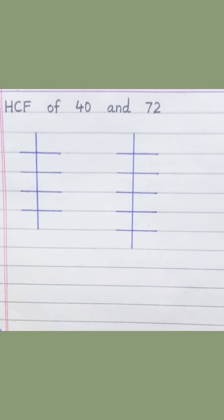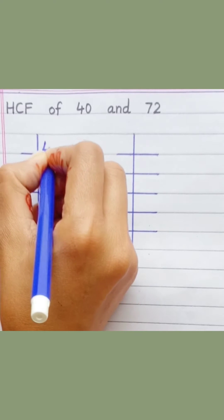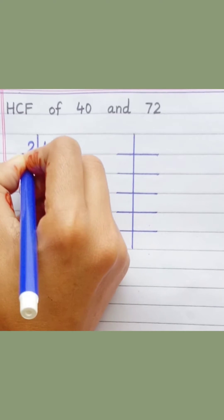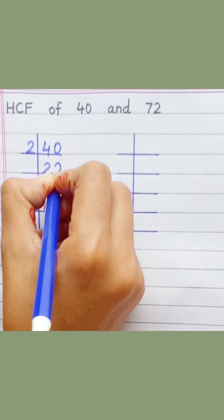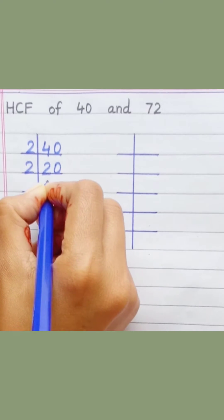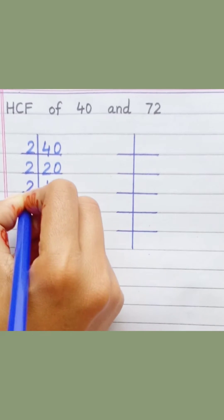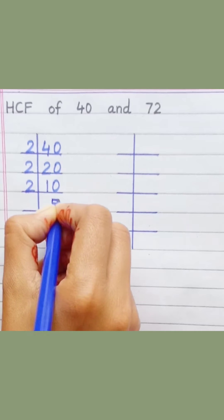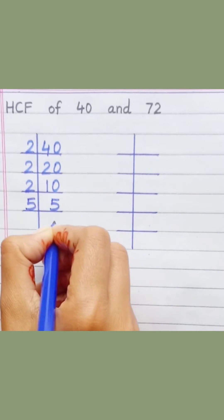40. 2 2's are 4, 2 0's are 0, 2 10's are 20, 2 5's are 10, 5 1's are 5.